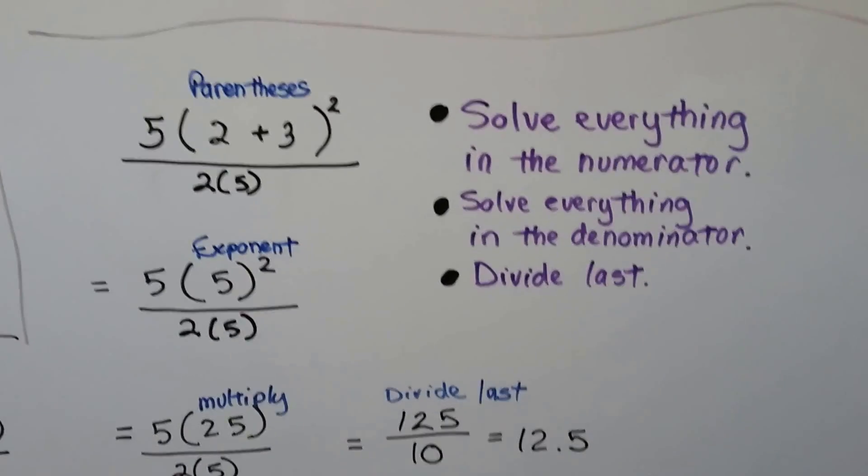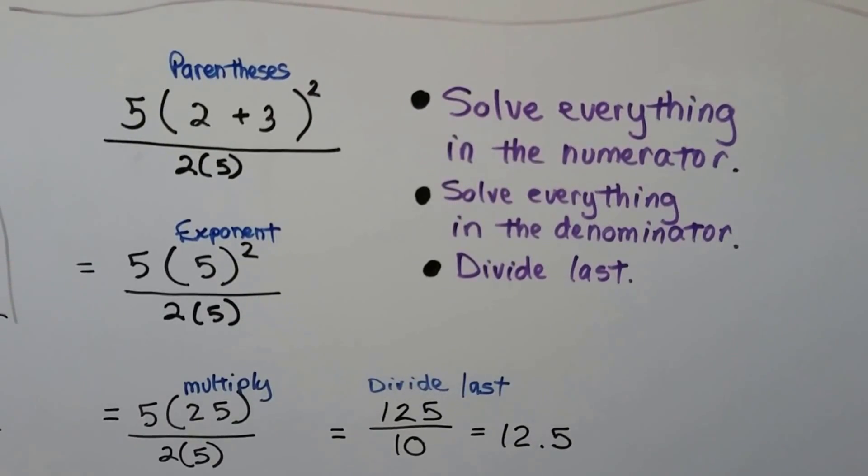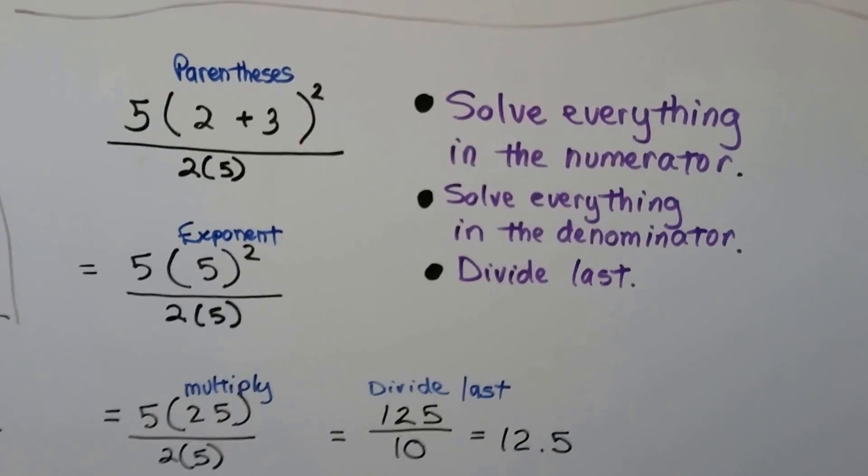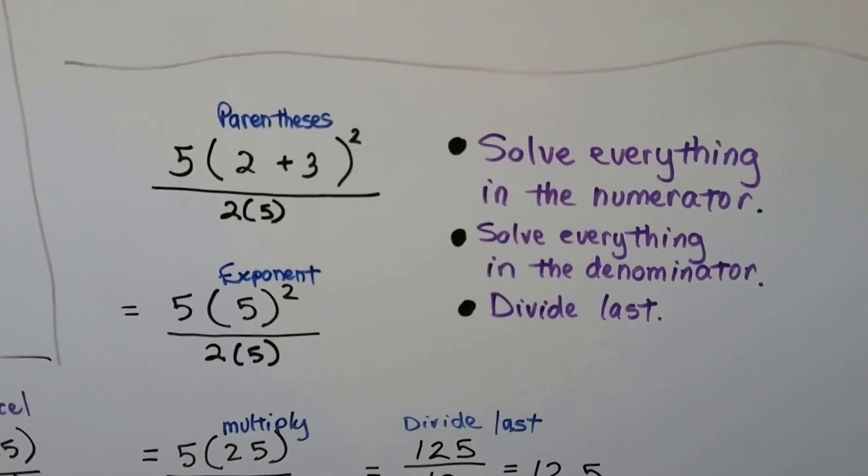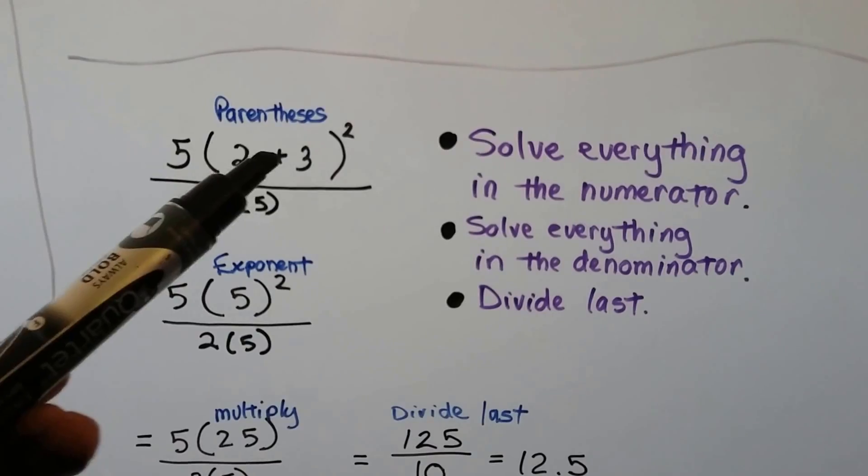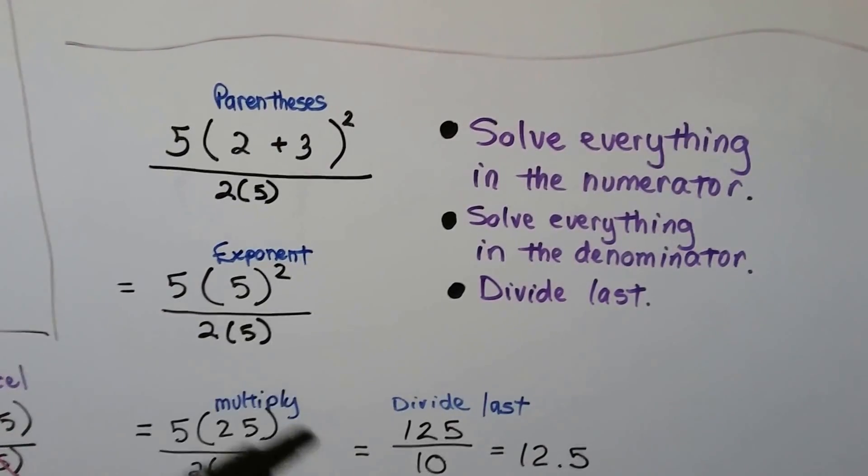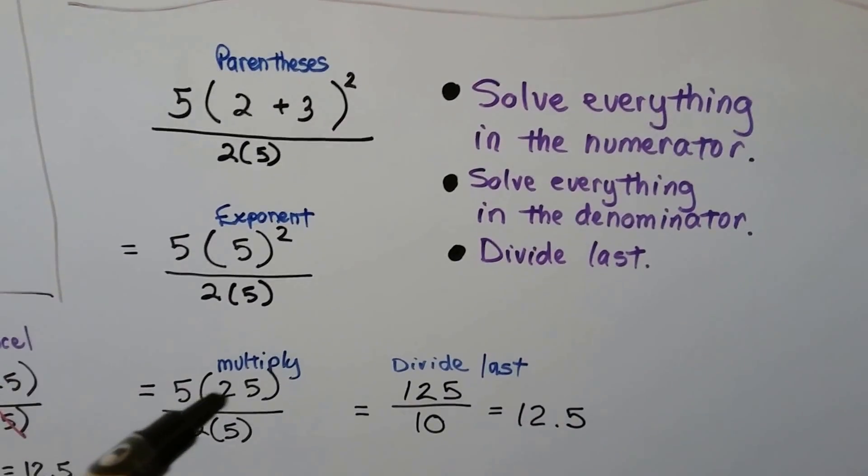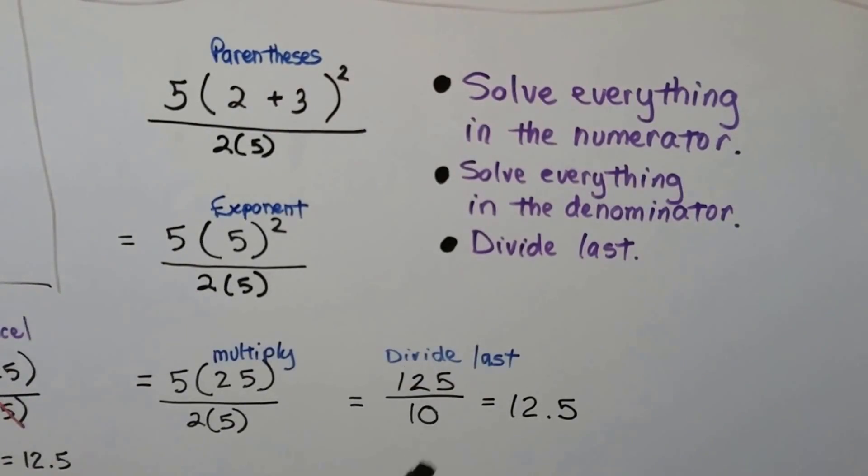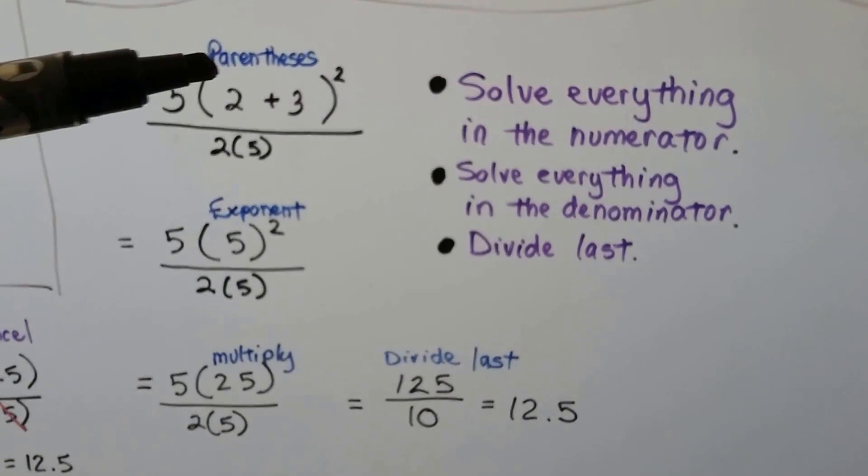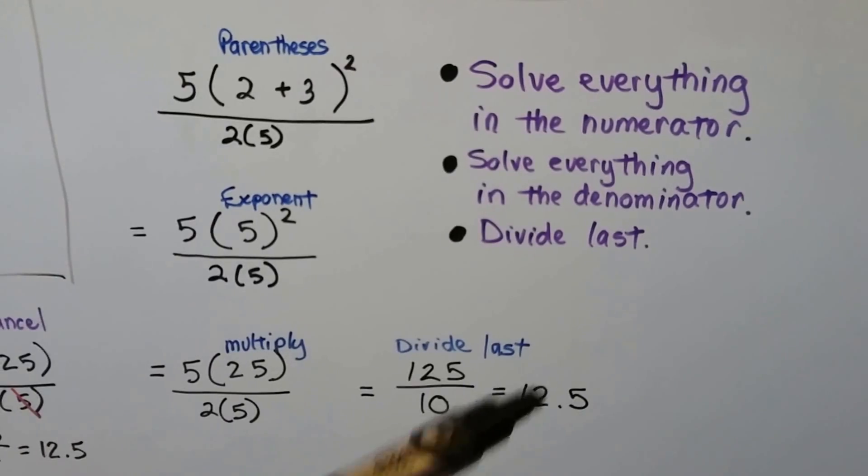When you see complicated fractions like this, we do the numerator first and solve everything in the numerator, then we solve everything in the denominator, and then we divide last. Now, it's not always this way, and I'll show you over here in a second about canceling out. But, to make it easy on yourself, do everything in the numerator first. We have 2 plus 3, that's a 5, and it's squared. Now, we do the exponents, because of order of operations, parentheses, exponents. 5 times 5 is 25, so that means we have 5 times 25, which is 125. And, 2 times 5 is 10. Now, we divide last. We did each one separately. We did the numerator separately from the denominator until we got it simplified like this. And, 125 divided by 10 is 12.5.